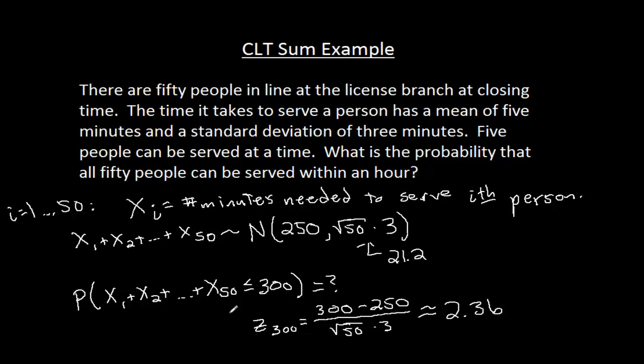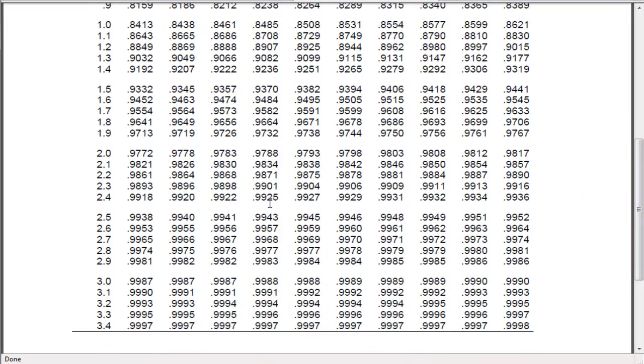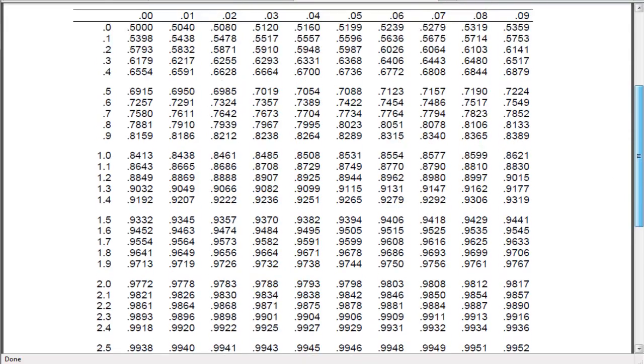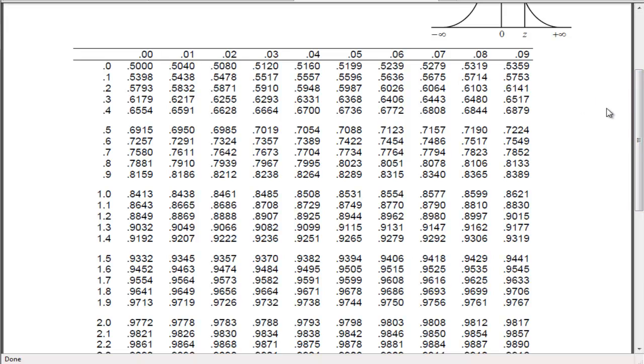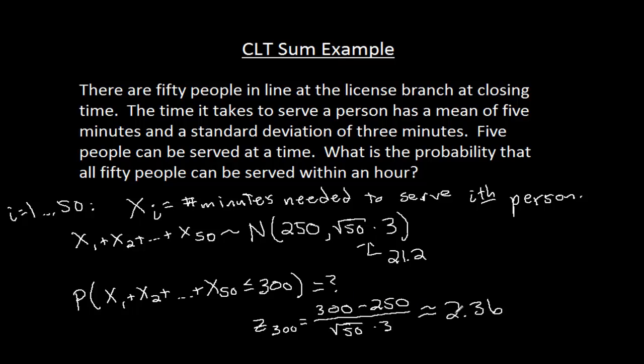We're looking for the probability that z is less than or equal to 2.36. If I pull up the normal distribution table here and find 2.36, it's way down here, right there. There's the 2.3 column. Notice that it's not at the bottom of that row, it's just one up. If I go up, there's .6. So 2.36, it's .9909.